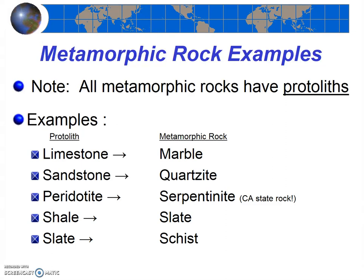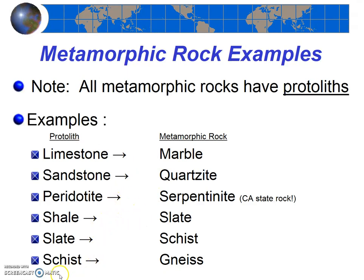Metamorphic rocks can be protoliths too. If that slate is exposed to even higher temperatures and pressures, it can turn into a rock called schist, which may then be exposed to even higher temperatures and pressures and turn into another metamorphic rock called gneiss. So we've given examples of several different metamorphic rocks and noted the specific protolith from which they came, including igneous, sedimentary, and even other metamorphic rocks as protoliths.